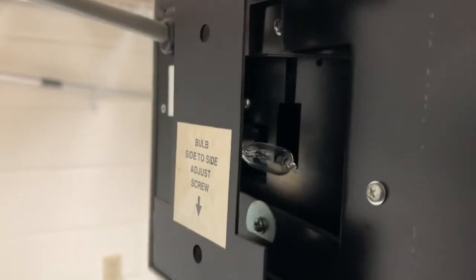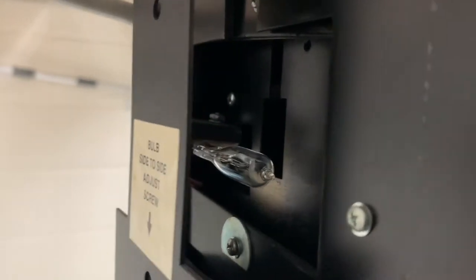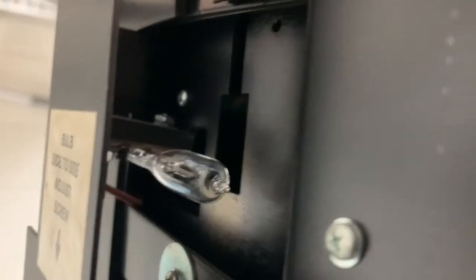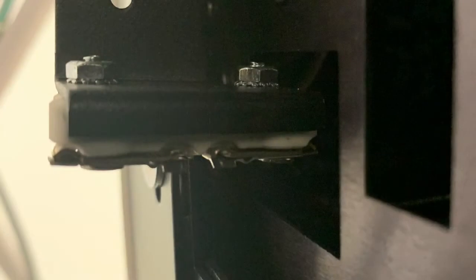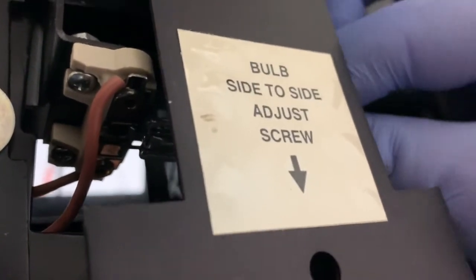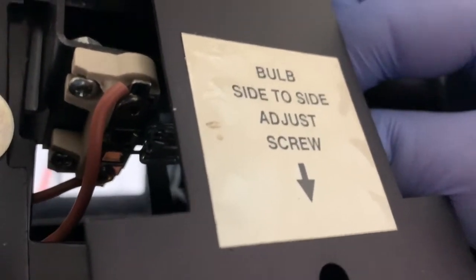With the cover removed, you'll find the bulb back behind this plate. To install the new bulb, you need to push those prongs into these small sockets here. Make sure you push the bulb all the way in and it's seated properly.